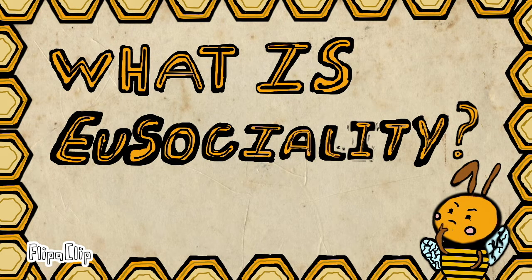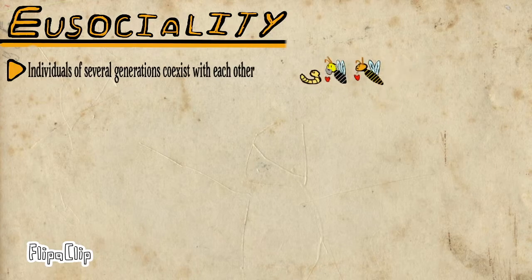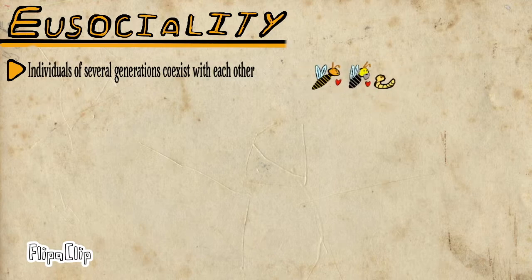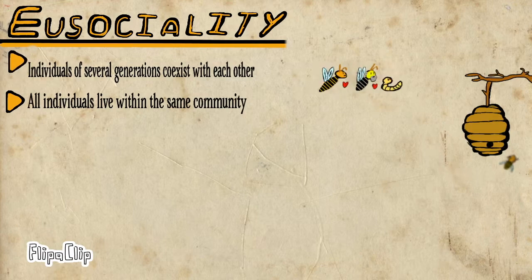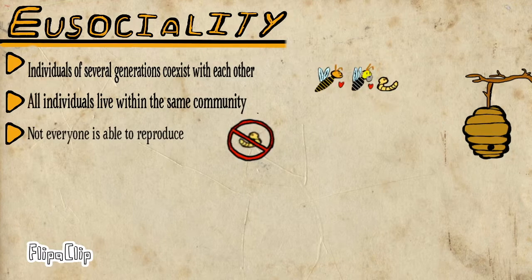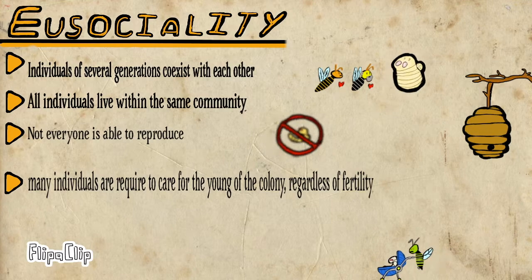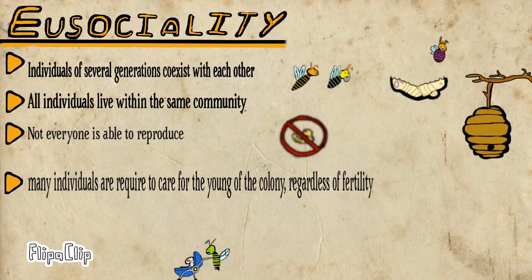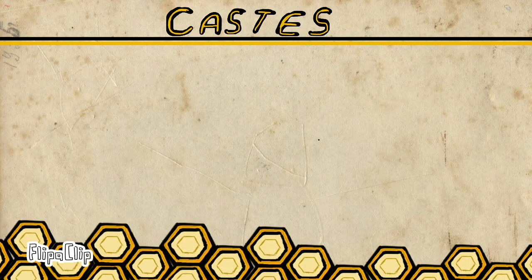We begin by answering the question: what is eusociality? Eusociality represents an advanced form of communal existence characterized by four conditions: one, individuals of several generations coexist with each other; two, all individuals live within the same community; three, not everyone is able to reproduce in this community; and four, many individuals are required to care for the offspring of other reproducing individuals and are assigned jobs based on their fertility.